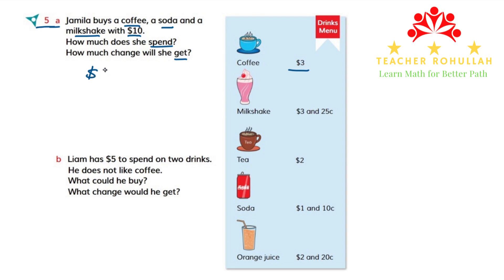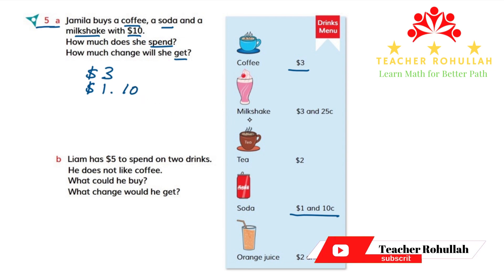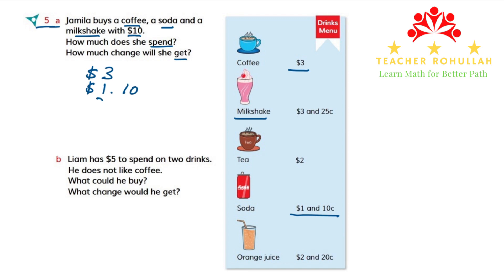So I will write $3 here. The second one is soda — the price of soda is $1.10, so I will write $1.10 using a decimal point. And the last one is milkshake — the price of milkshake is $3.25. Now to add these amounts, I will give a decimal point and two placeholder zeros to $3 so that I can easily add them.